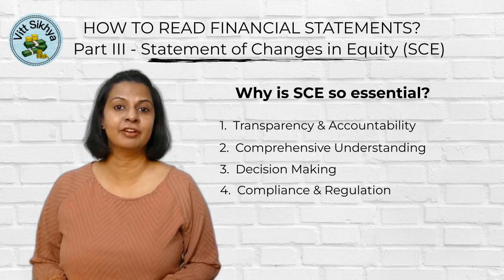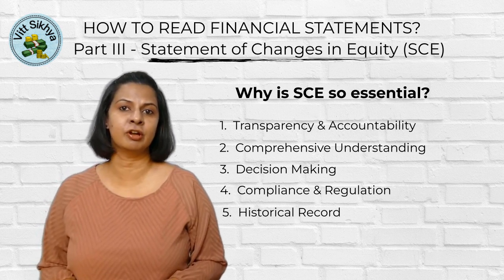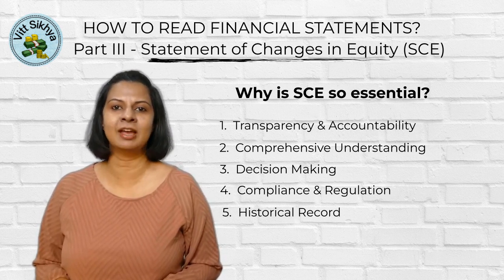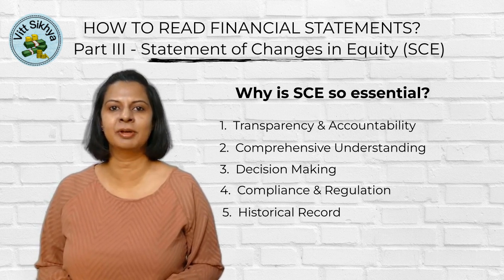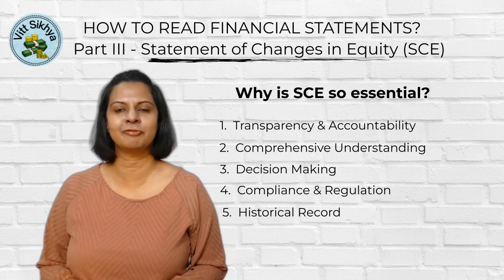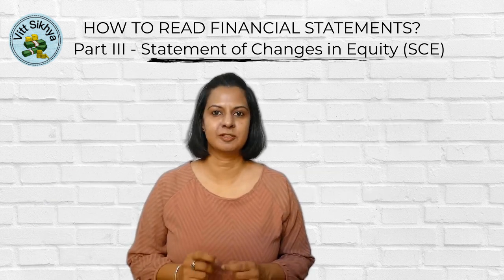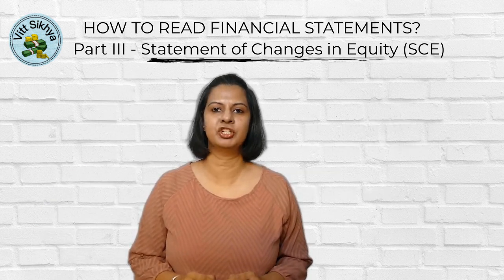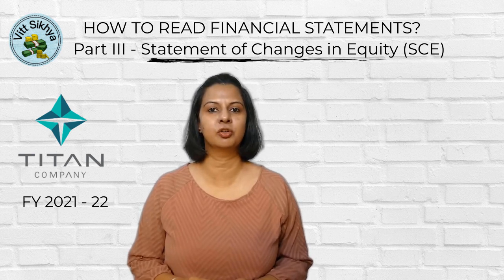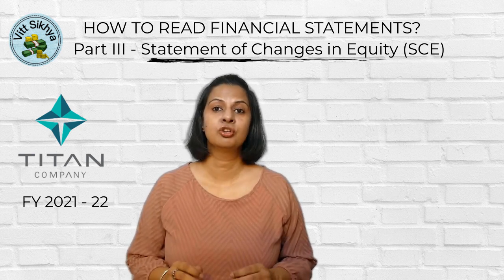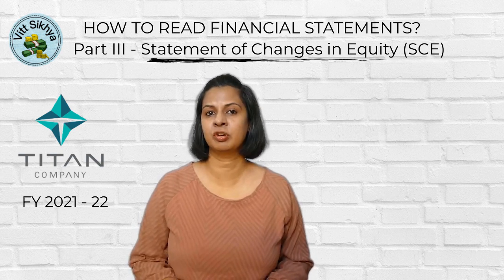Number five is historical record. The SCE serves as a historical record of a company's equity transactions, making it useful for trend analysis and comparing financial performance over time. Now let's get a bit more specific. The statement of changes in equity for Titan Limited in financial year 2021-22 shows us how the company's equity changed during that time.